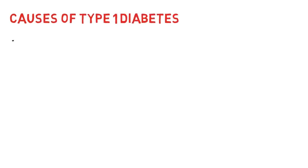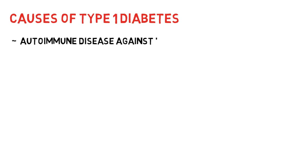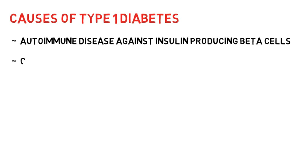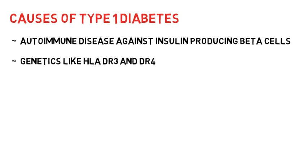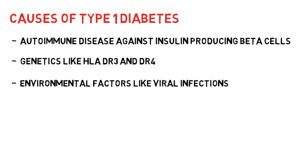Following are the causes of type 1 diabetes. Number 1: autoimmune diseases against insulin-producing beta cells of the pancreas. Number 2: genetics play an important role in the predisposition of diabetes — for example, genes HLA-DR3 and HLA-DR4 are associated with the risk of diabetes mellitus. Various environmental factors like viral infections also trigger the disease.